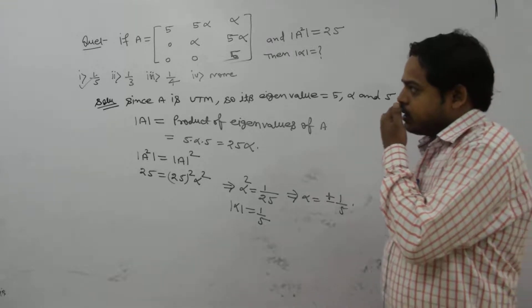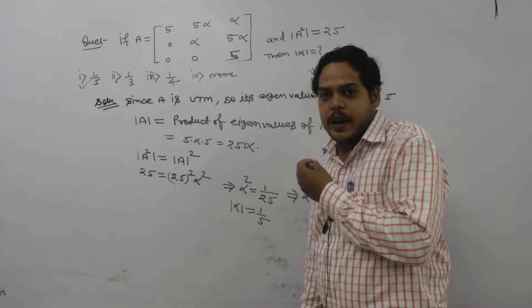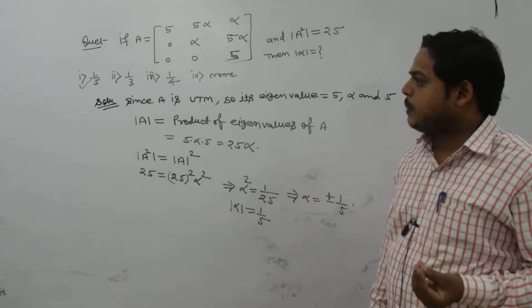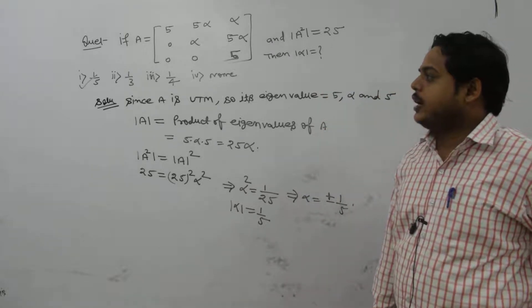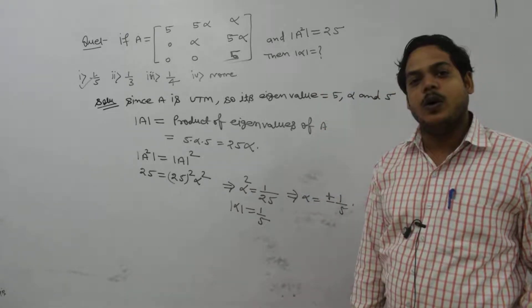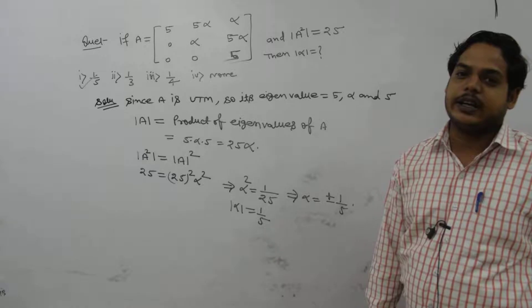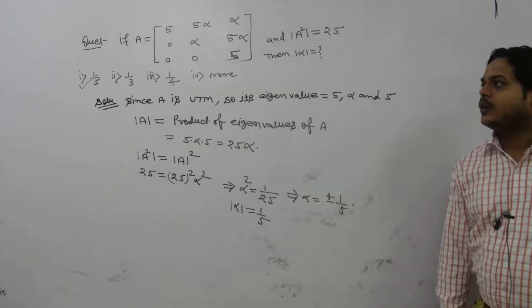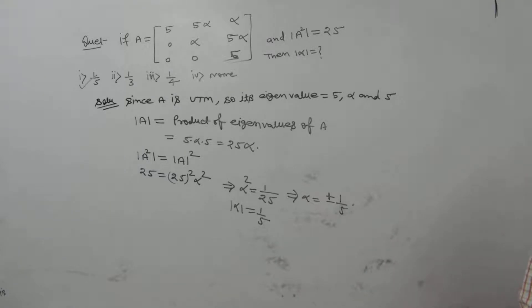This question can be solved very easily using the eigenvalue property of the matrix. If our matrix is upper triangular, lower triangular, or diagonal, then its eigenvalues can be directly written down as the principal diagonal elements of that matrix.